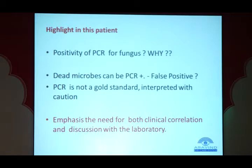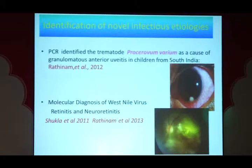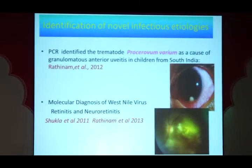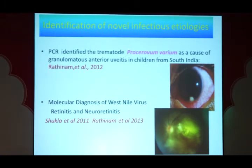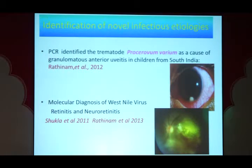A healthy dialogue with the lab is essential before accepting any PCR results. However, molecular diagnostics have proven useful in many situations — for example, in identifying Porrocaecum varium as a new etiology of childhood uveitis in a published series from our institute, and in establishing vesicular virus as the cause in outbreaks of viral retinitis and neuroretinitis using molecular diagnosis.